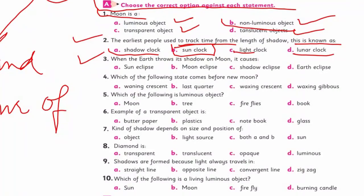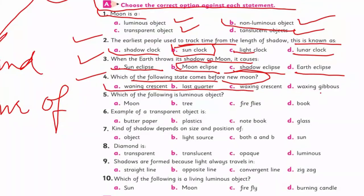When Earth comes in between Sun and Moon and Moon appears less visible, what happens? Sun eclipse, moon eclipse, shadow eclipse, or earth eclipse? Of course, moon eclipse or lunar eclipse. Number four: which one of the following state comes before new moon? There are eight phases - I won't tell you, you have to find it out. If you forgot, go back to the text and review.